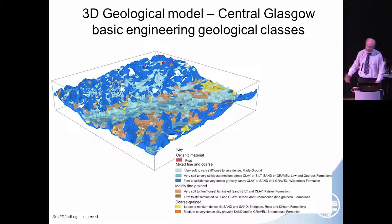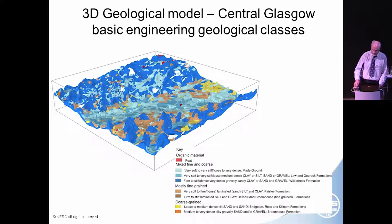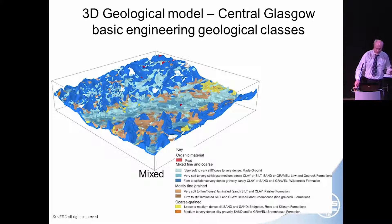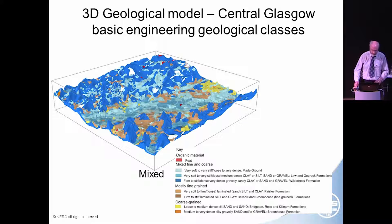Here's a 3D model — the geological 3D model of central Glasgow. It's slightly different because I've classified each of the geological units into engineering geological classes, very basic ones. The blue units are mixed units, so they may be sand and gravel and clay, or sand and gravel mixed in with clay. The paler the colour, the softer or weaker the material. The darker blue represents the Wilderness Till Formation, which tends to be firm to stiff or very stiff, whereas the pale blue represents very soft to loose material.